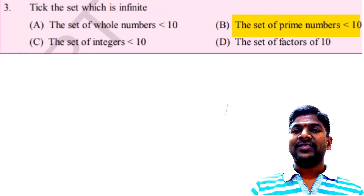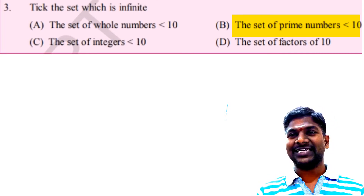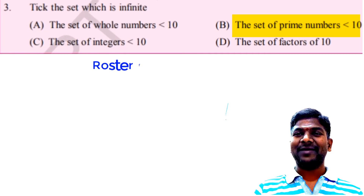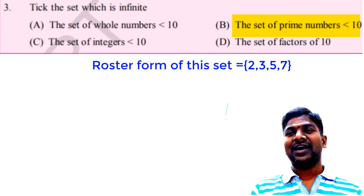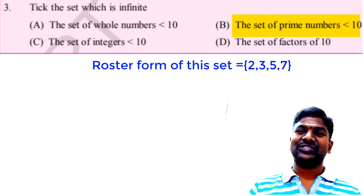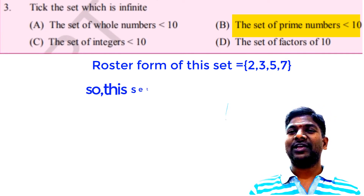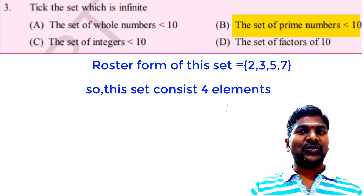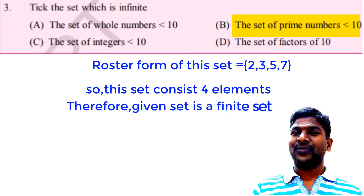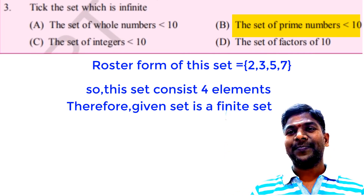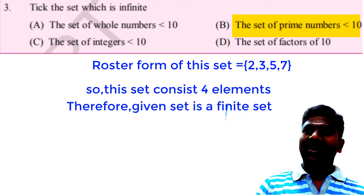The second question: the set of prime numbers less than 10. The prime numbers less than 10 are: 2, 3, 5, 7. There are clearly 4 elements. It is a finite set, not an infinite set. So we cannot put a tick mark on this question either.